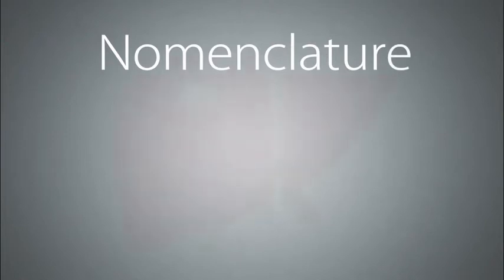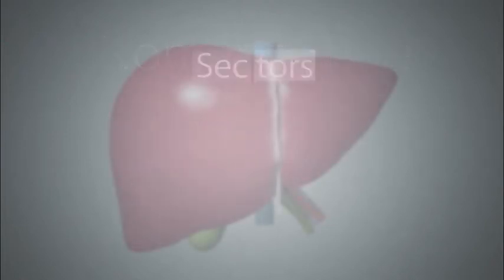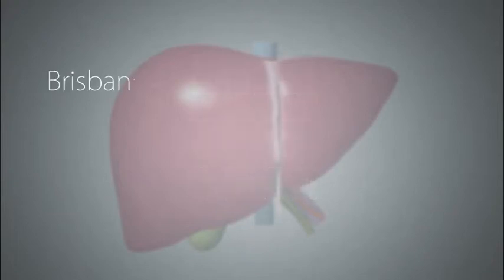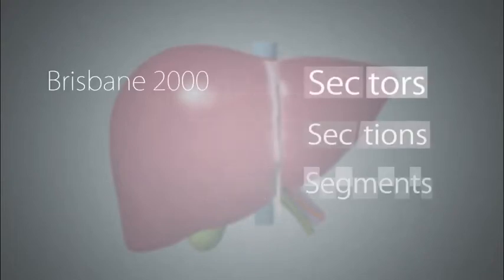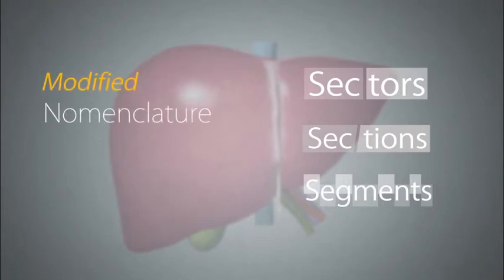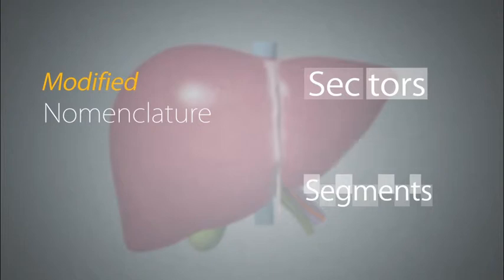The nomenclature for internal liver anatomy includes sectors, sections, and segments. In this tutorial, this nomenclature system will be reviewed, but we will also introduce a slightly modified clinically applicable system that does not use the term section.